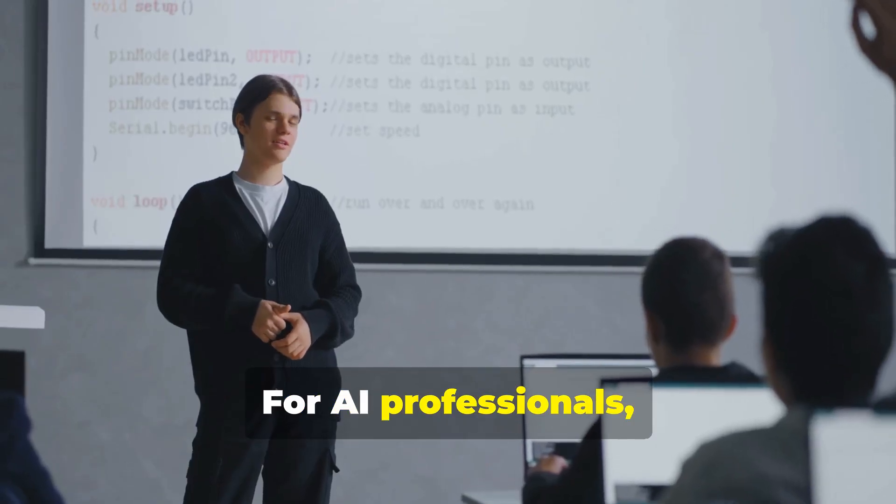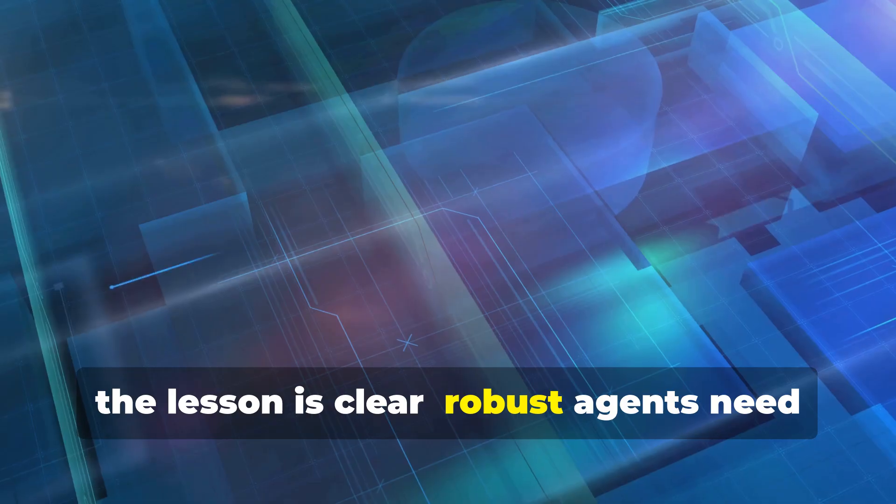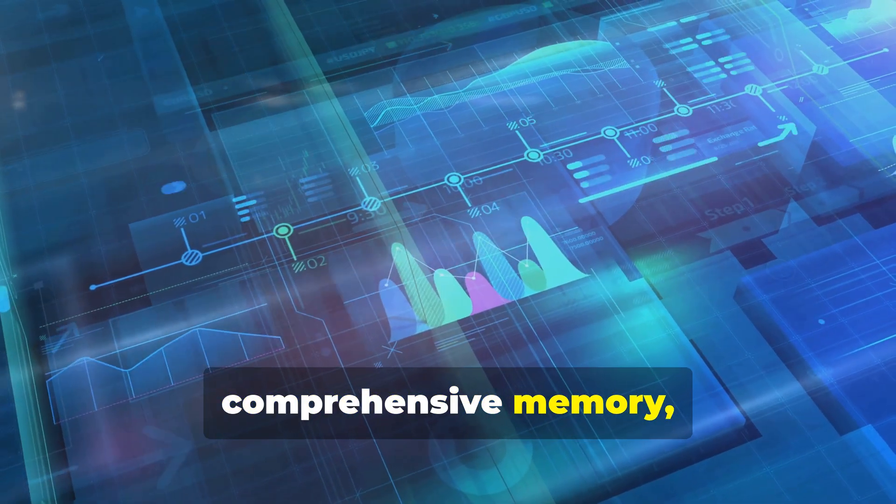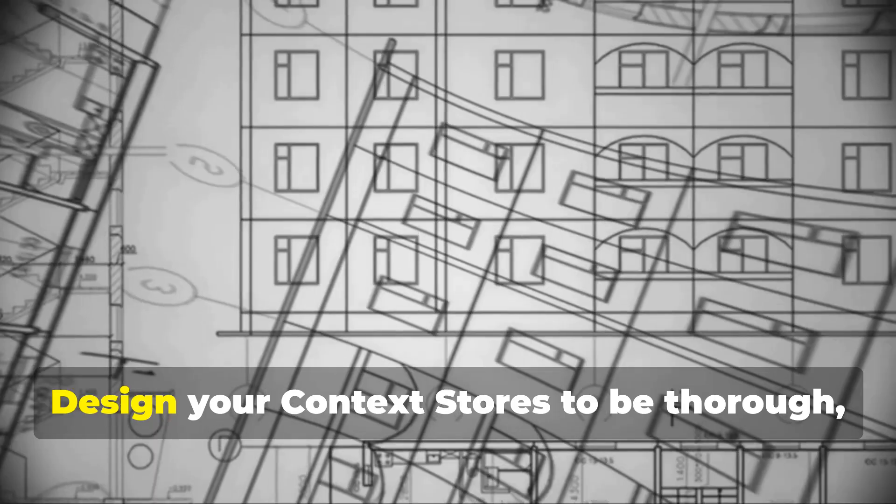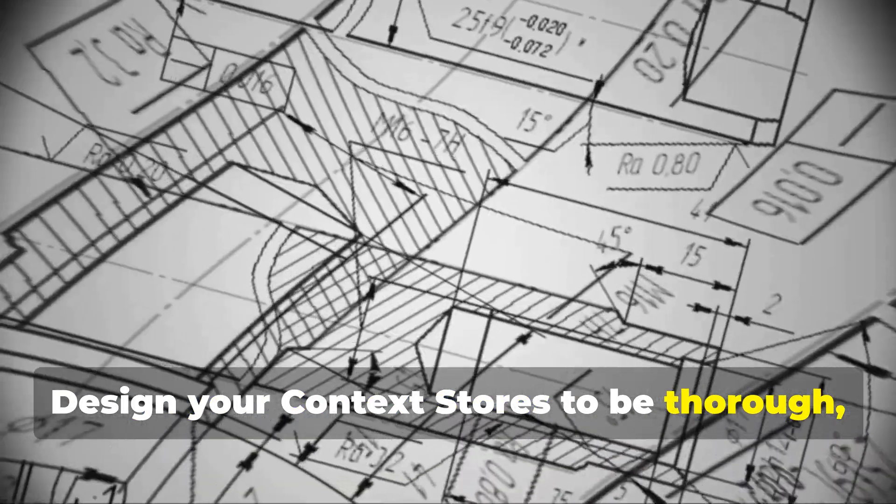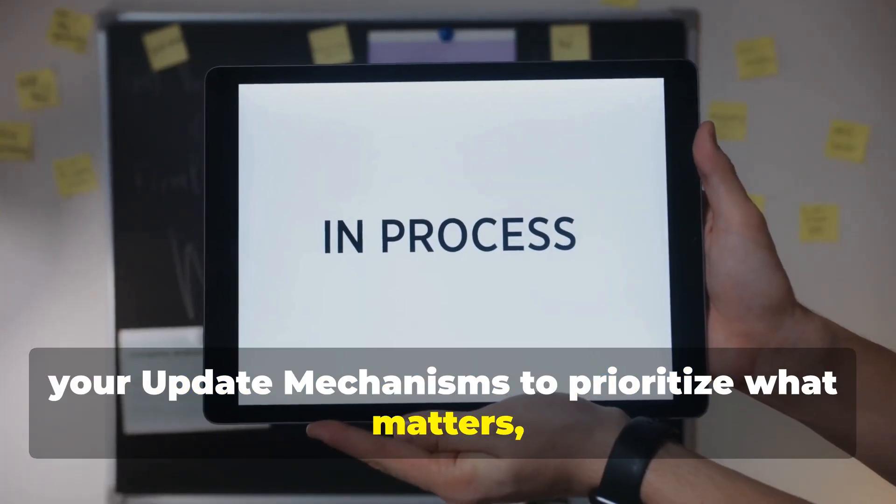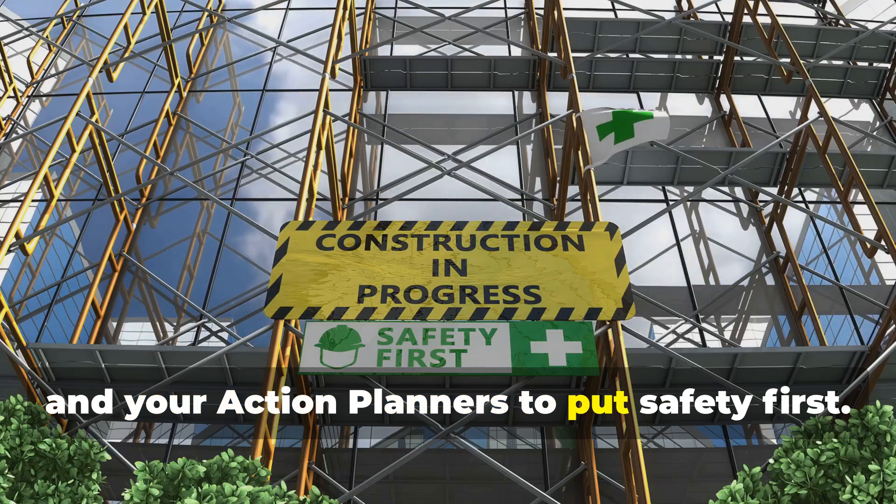For AI professionals, the lesson is clear. Robust agents need comprehensive memory, ruthless relevance, and unwavering safety. Design your context stores to be thorough, your update mechanisms to prioritize what matters, and your action planners to put safety first.